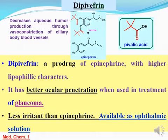عشان كده حضروا منه prodrug اسمه الـ Dipivefrine، وده عبارة عن esterification للـ two catechol OH بي pivalic acid. الـ two pivalyl moieties دول زادوا الـ lipophilicity وبالتالي زادوا الـ ocular penetration. كمان عملوا mask للـ two phenolic OH على الـ alpha-1 receptors اللي موجودة في الـ ciliary body blood vessels في الـ eye، ويتقلل الـ intraocular pressure. Available as ophthalmic solution.